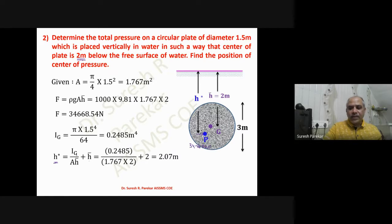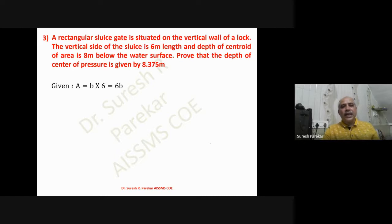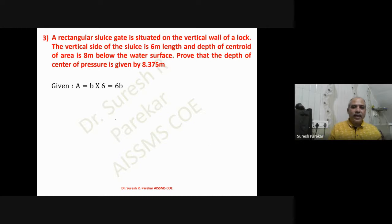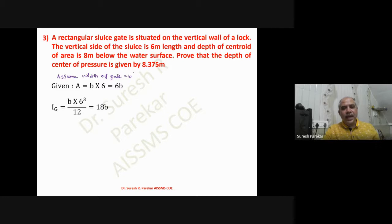Now we have a rectangular gate where width b is not given, and we have to prove that the depth of center of pressure is 8.375 meters. We assume width of gate equal to b. Then we have area = 6b, I_G = b·d³/12 = 18b, and putting these into h* = I_G/(A·h̄) + h̄, the b terms cancel and we get h* = 8.375 meters, which is what we needed to prove.